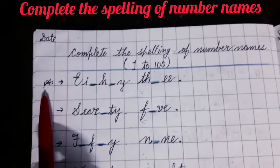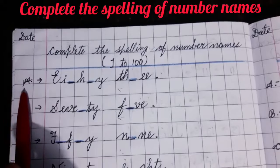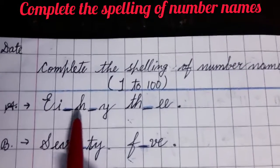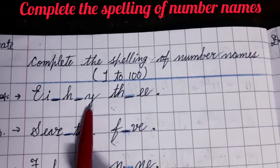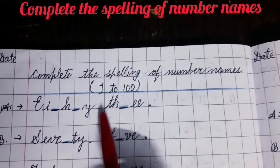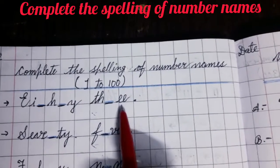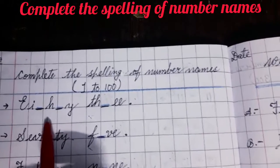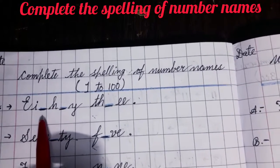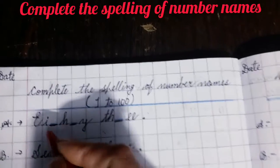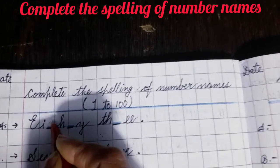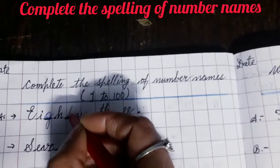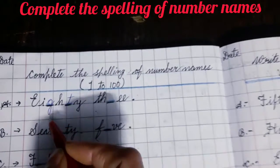Then you will write A, put an arrow inside the margin line. And beside this margin line, you will write: E I blank space H blank space Y. So firstly, you will read this word. What is this word? This is EIGHTY. E I is already written, so you will fill in G. H is written here, fill in T. EIGHT — this is the spelling of EIGHT.